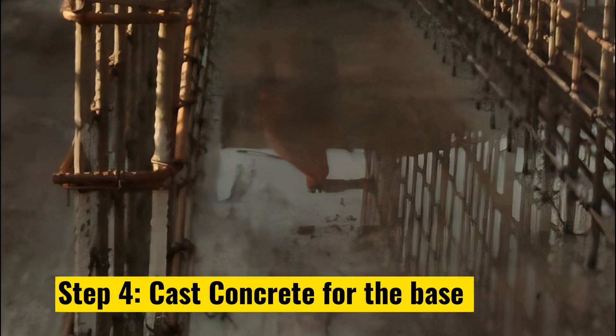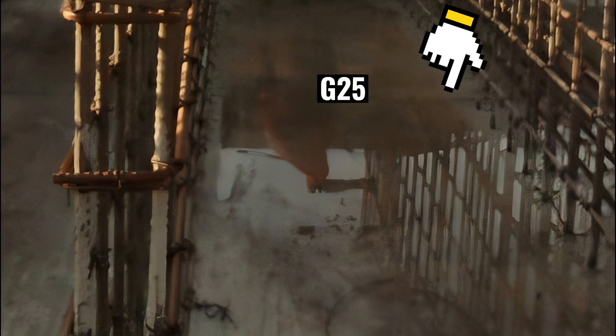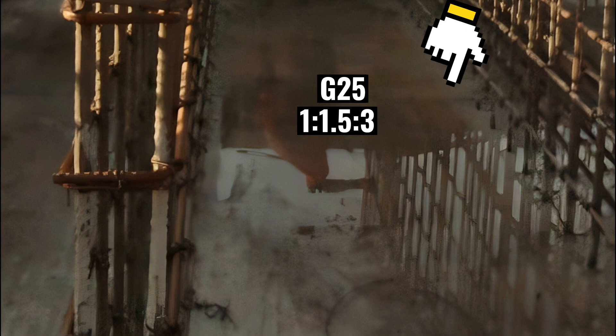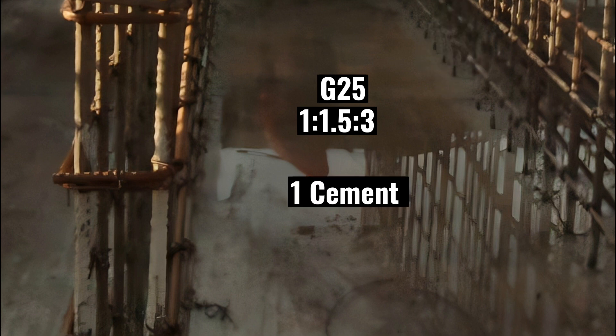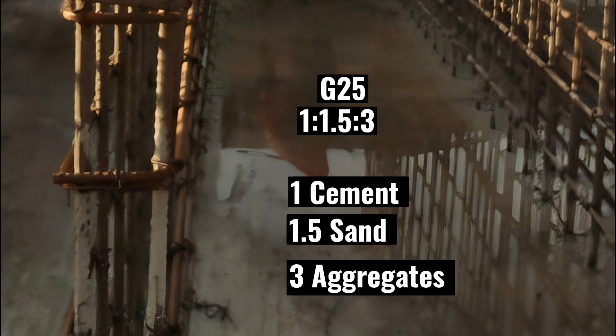The fourth step is to cast a 600mm thick concrete of grade 25 for the rough foundation. Use mix ratio 1:1.5:3. That is 1 part of cement, 1.5 parts of sand and 3 parts of aggregates.